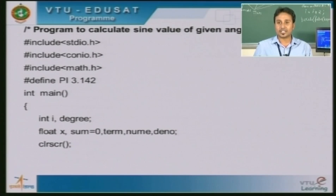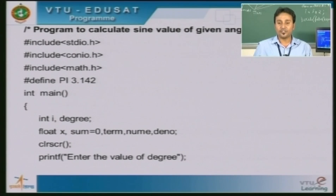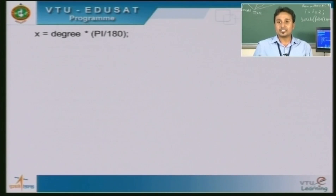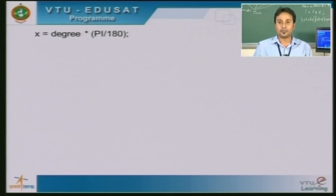Next we have clrscr, which is used to clear the output screen. We need to enter the value of a degree, so we have a printf function for the prompt. Next, scanf accepts input from the keyboard using %d, since the value of degree is an integer data type. Since we give the value in degrees, we need to convert it to radians to calculate the sin of the angle. The conversion formula is x equals degree multiplied by PI divided by 180.